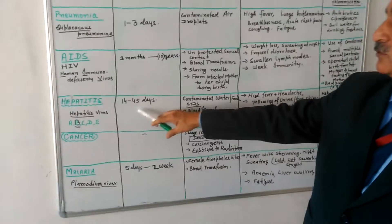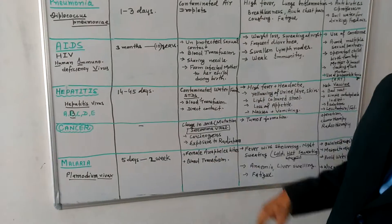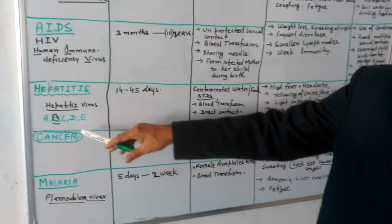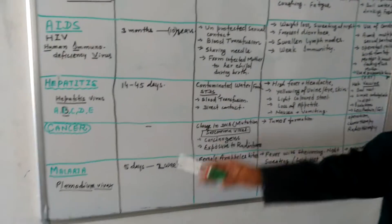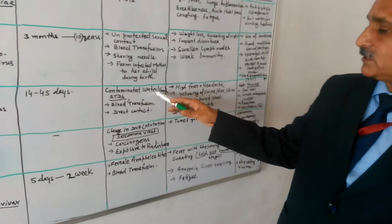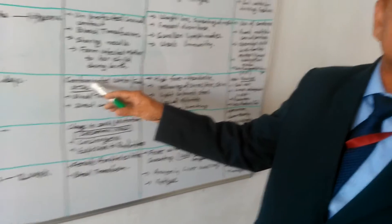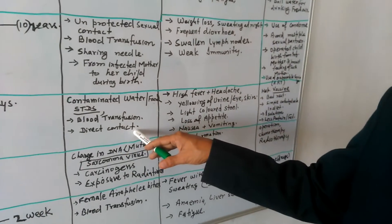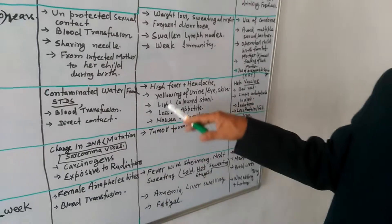Hepatitis. Next is 14 to 45 days is the incubation period. It's a viral hepatitis, virus A, B, C, D where the B is the most dangerous. Contaminated water, food and it is also STD, sexually transmitted disease. Blood transfusion is there. Direct contact can also cause the hepatitis.